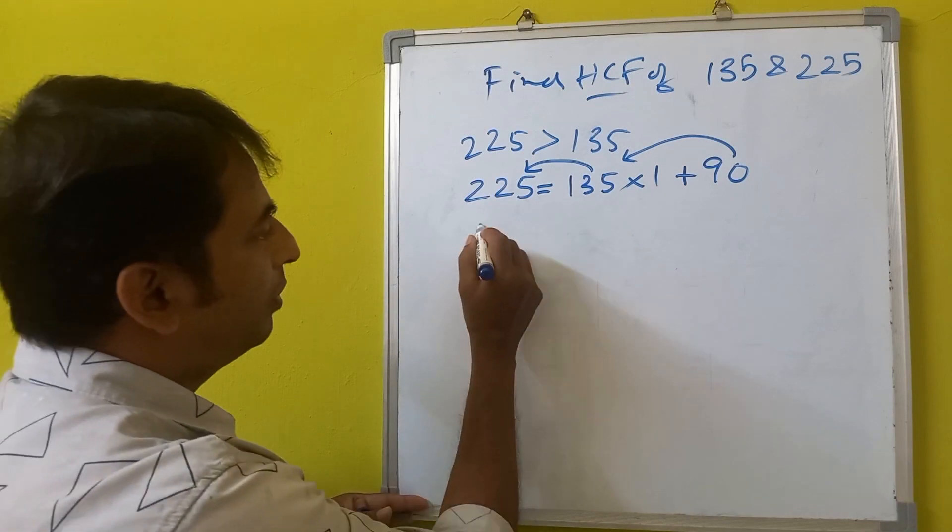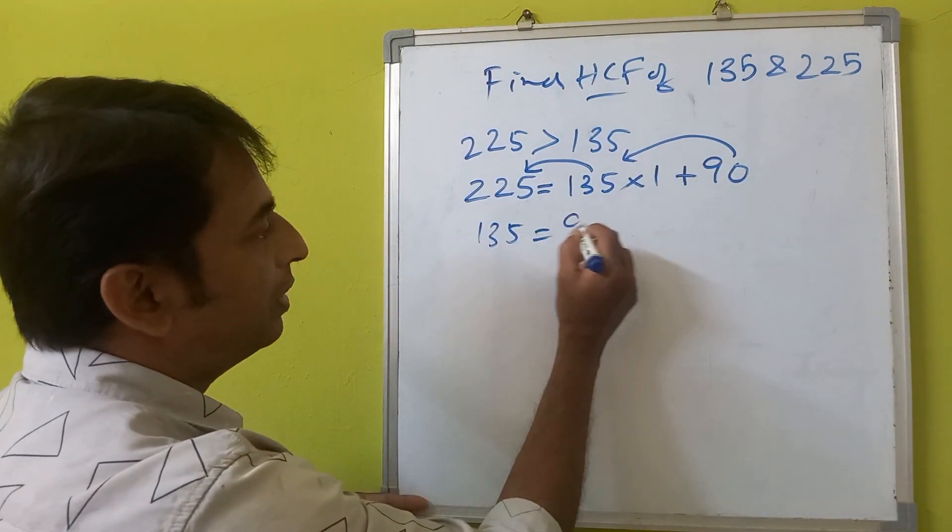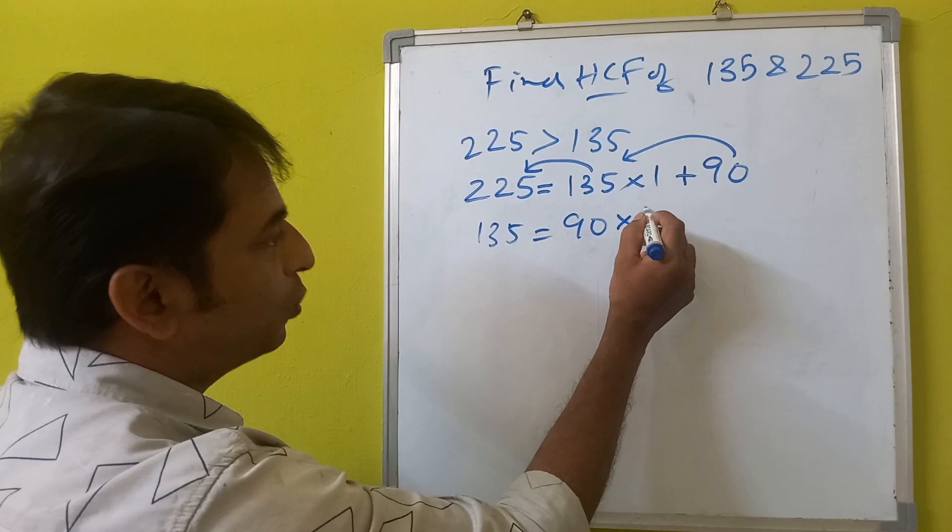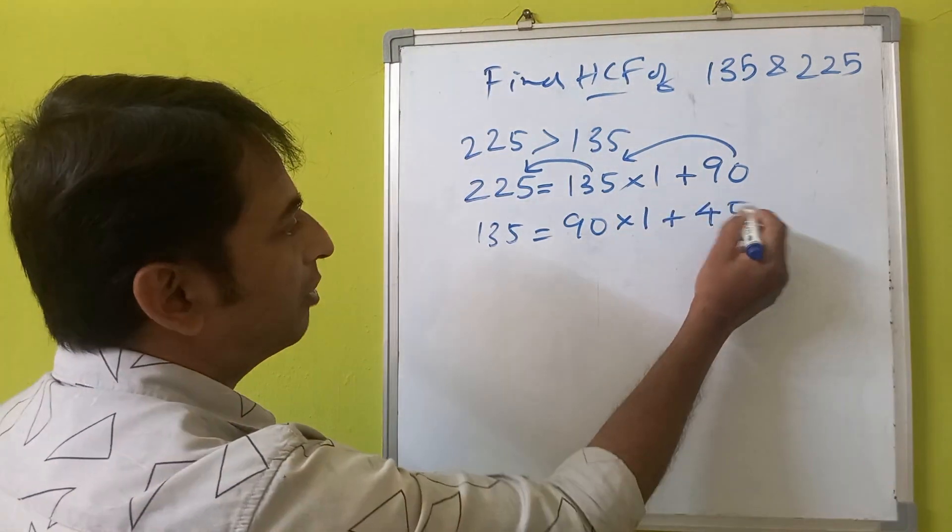Here this will be 135 equals 90 times 1 plus the remainder will be 45.